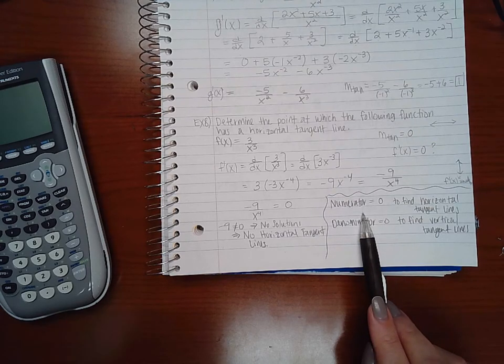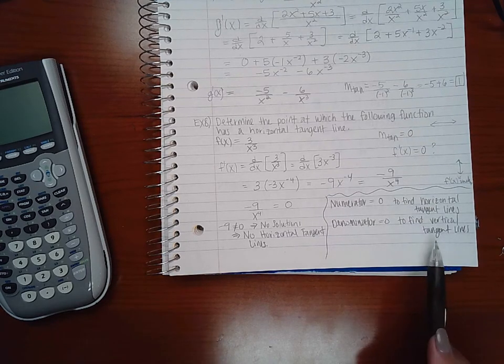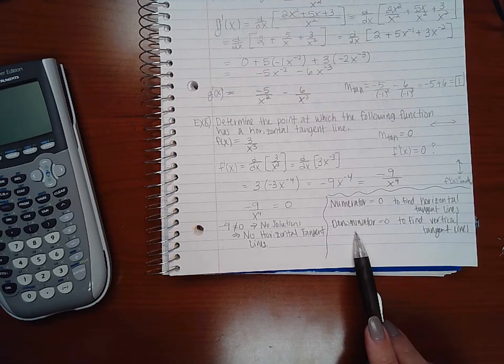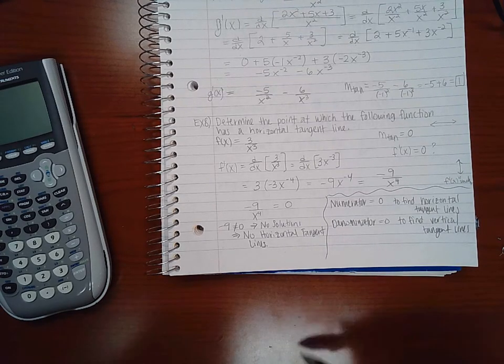you set the numerator equal to 0 and find those x values, and then to get the vertical tangent lines, you set the denominator equal to 0 and find those x values.